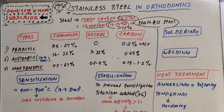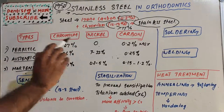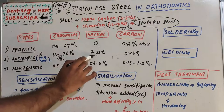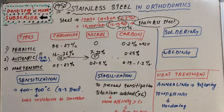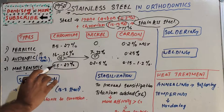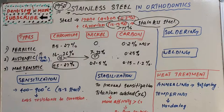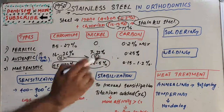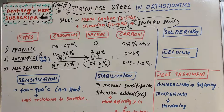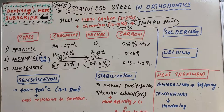The austenitic type is also known as 18-8 steel, which has 16 to 26% chromium — typically 18% — and nickel in the range of 7 to 22%, mostly 8%, which is why it is called 18-8. Carbon is around 0.25%. The third category, martensitic, has chromium in the range of 11.5 to 27%, nickel is comparatively less at 0.2 to 5%, and carbon is in the range of 0.15 to 1.2%.